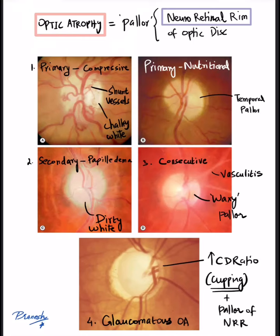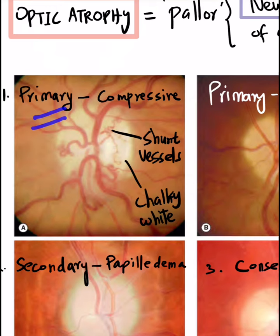The four types of optic atrophy are primary, secondary, consecutive, and glaucomatous optic atrophy. In this picture, primary optic atrophy is characterized by a chalky white pallor. Since it is a compressive optic neuropathy causing this primary optic atrophy, we can observe the shunt vessels here.